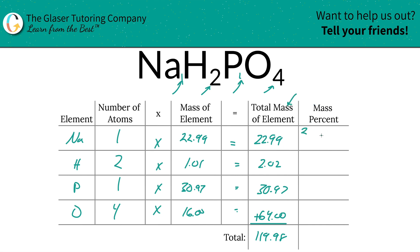That's the purpose of calculating this column. So 22.99 divided by the total mass of the entire compound, which is 119.98. The units of mass will cancel, so it doesn't matter if it's amu or grams per mole—it doesn't make a difference when you calculate the percentage. It's going to be 19.16 percent.